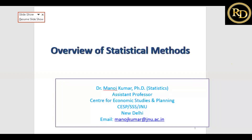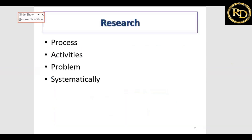Let's start with what is research, and then gradually we can understand what the objectives are. After that we will talk about what statistical methods are available and how you can go for data analysis. Research is nothing but a process activity for solving problems systematically.